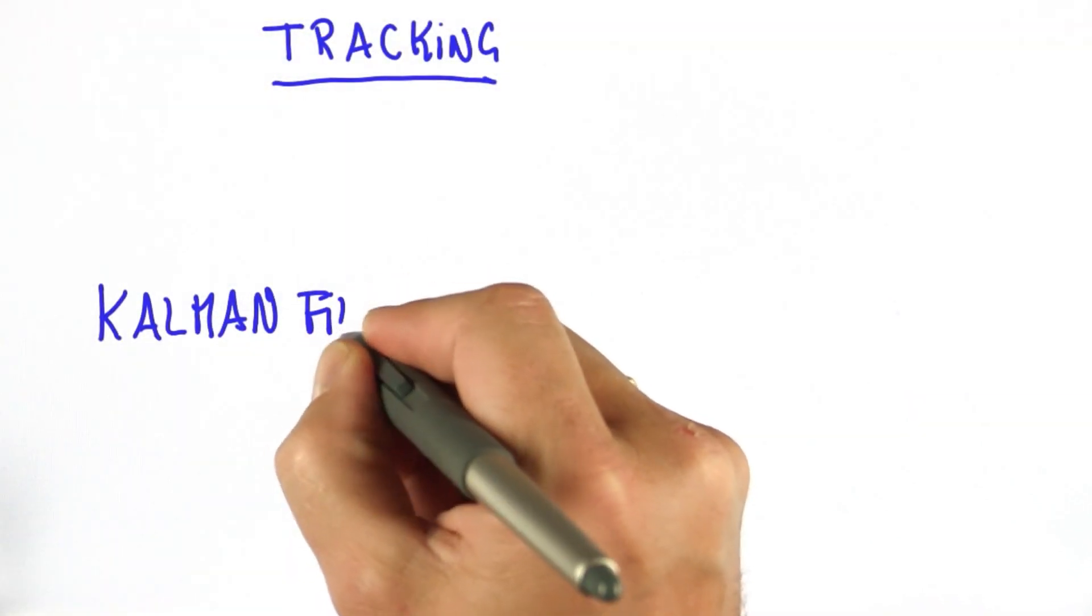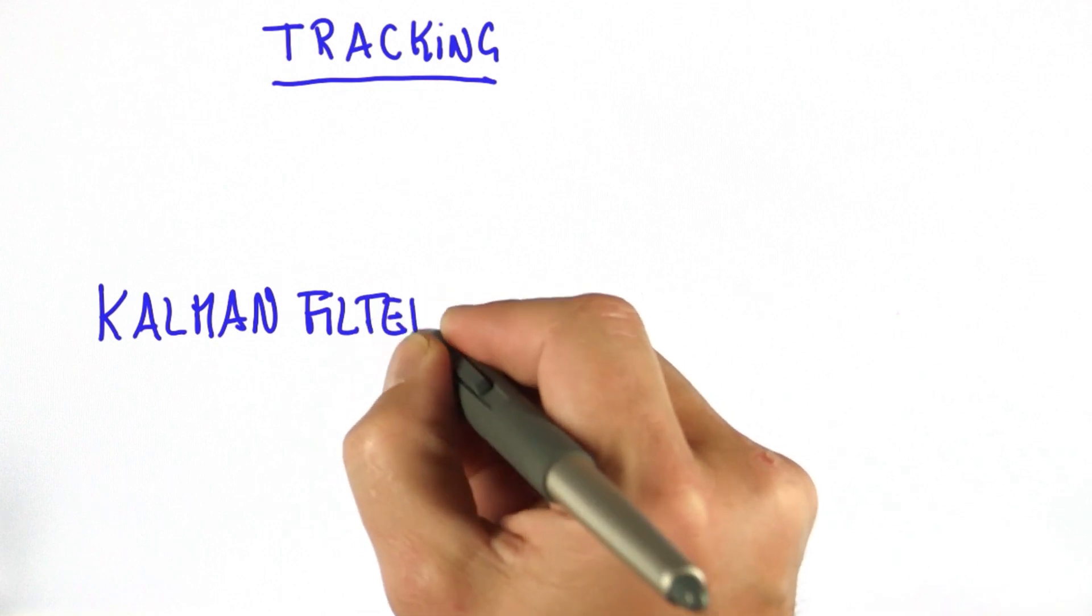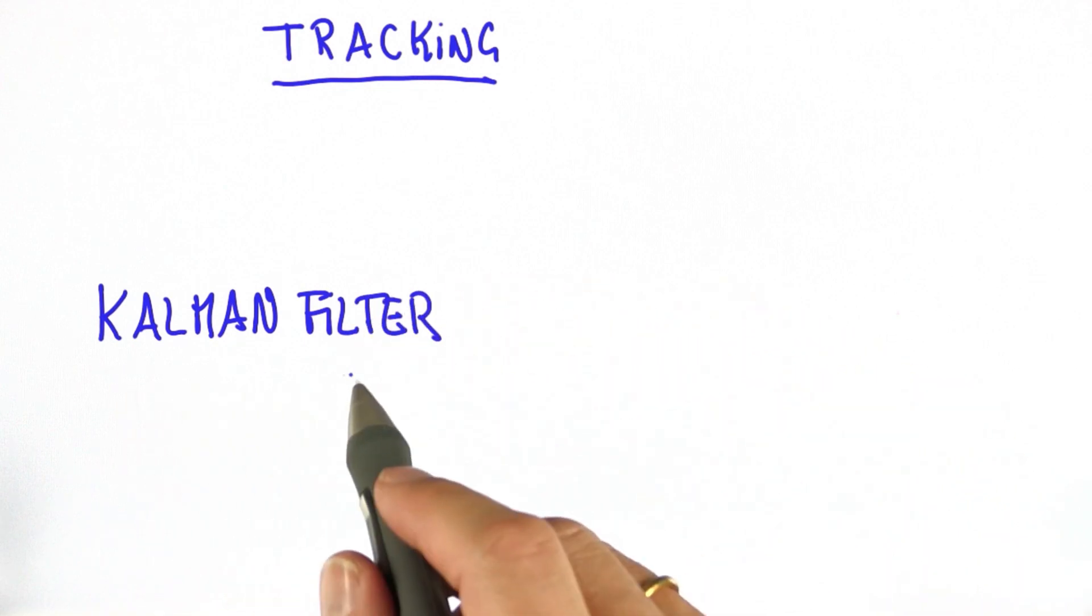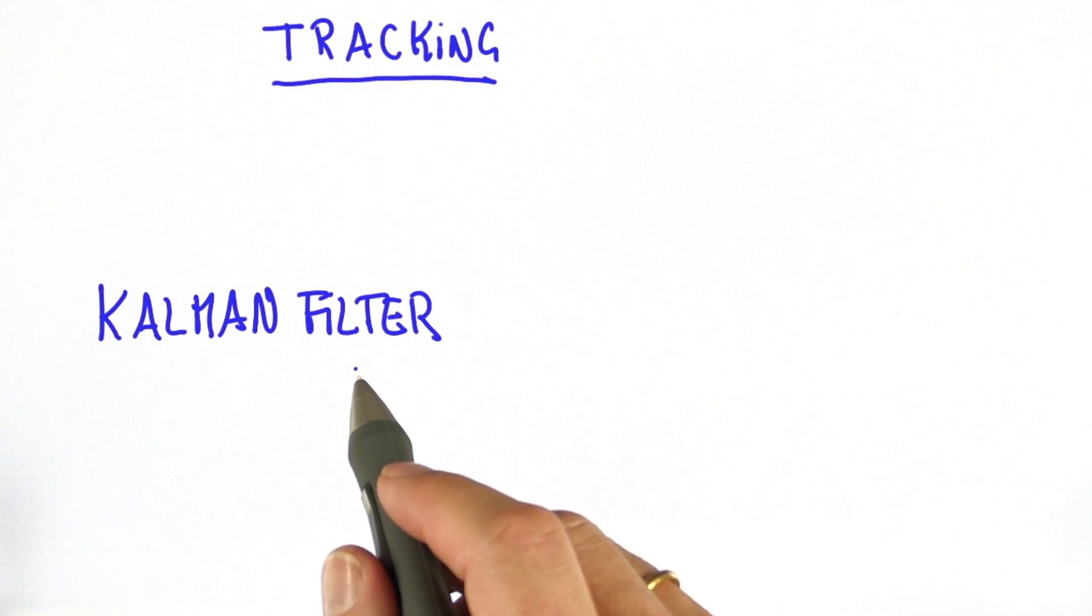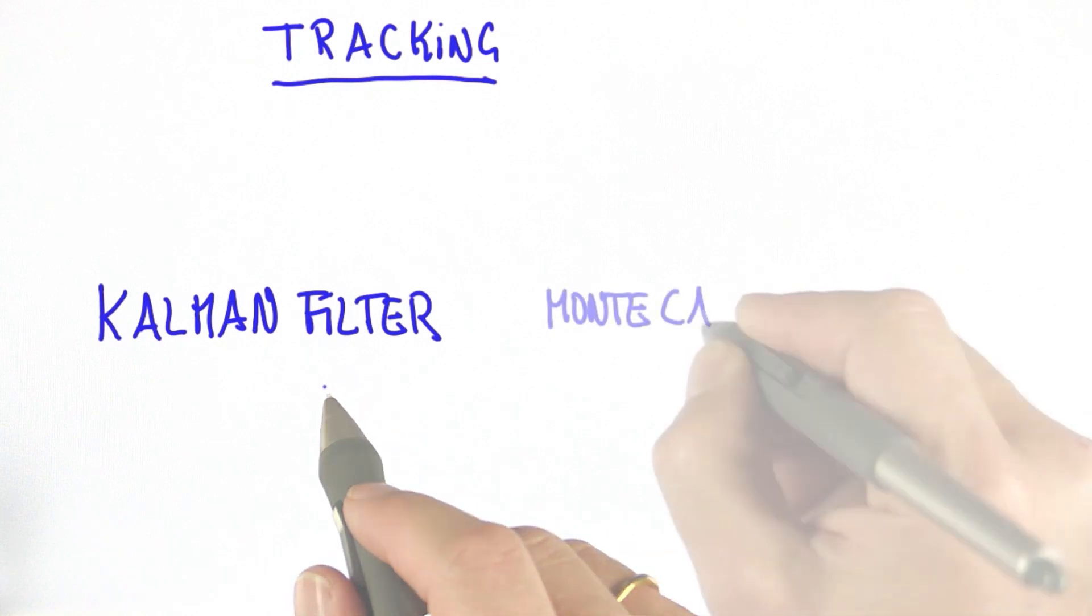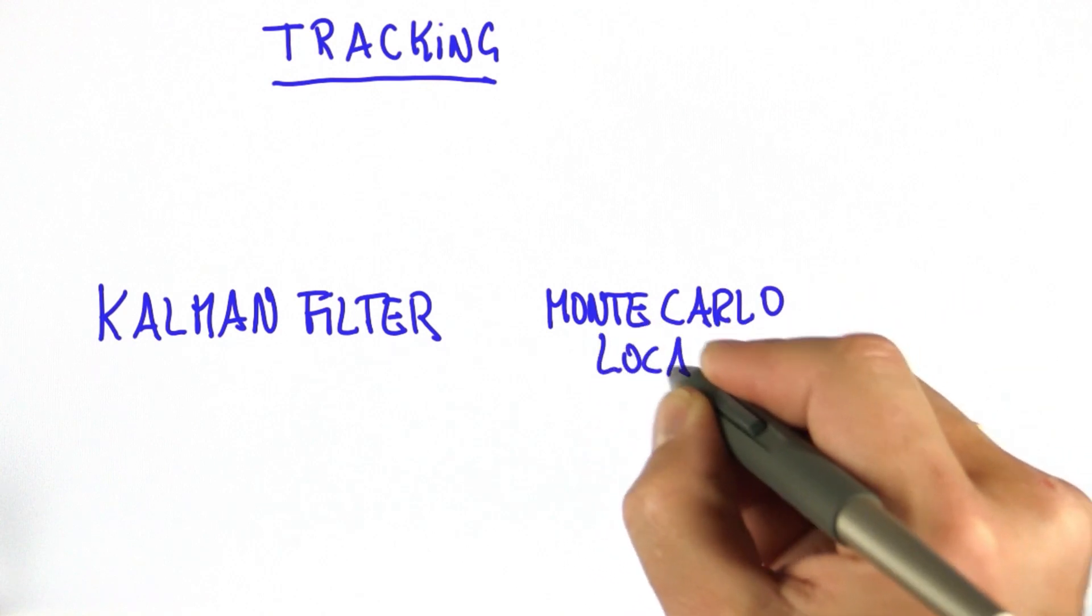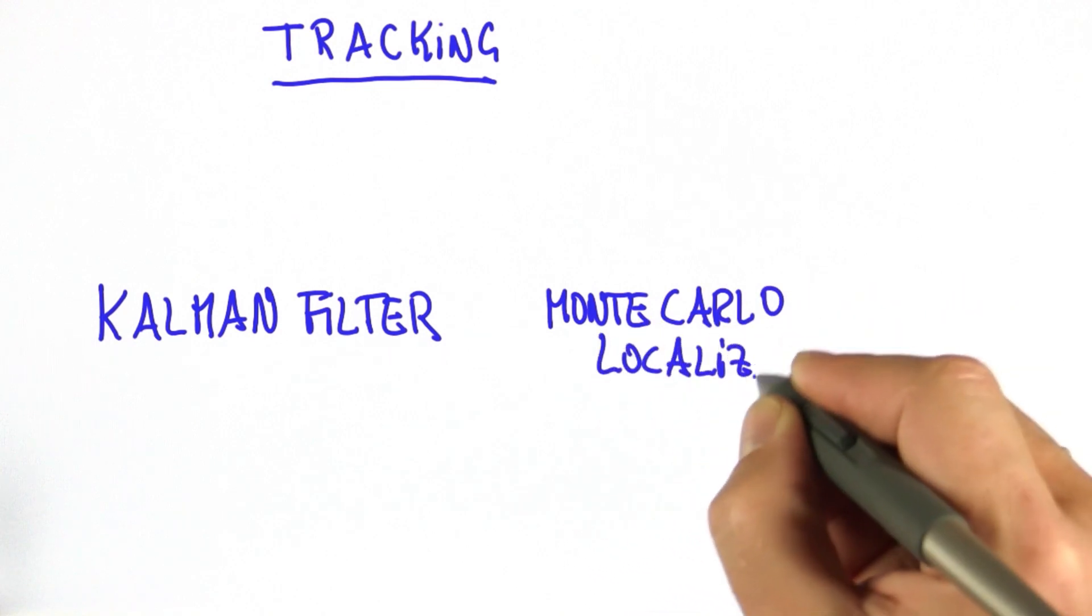So in this class we'll talk about tracking. And the technique I'd like to teach you is called a Kalman filter. This is an insanely popular technique for estimating the state of a system. It's actually very similar to the probabilistic localization method we talked about in the previous class, Monte Carlo localization.